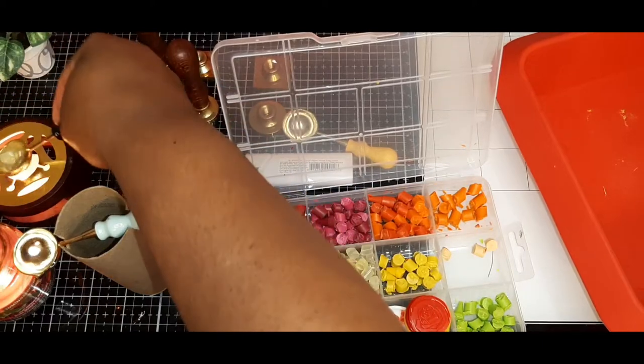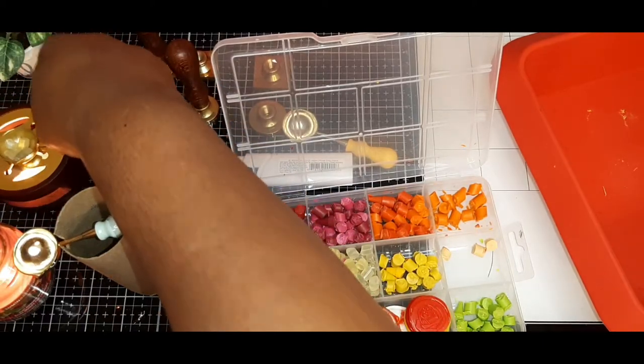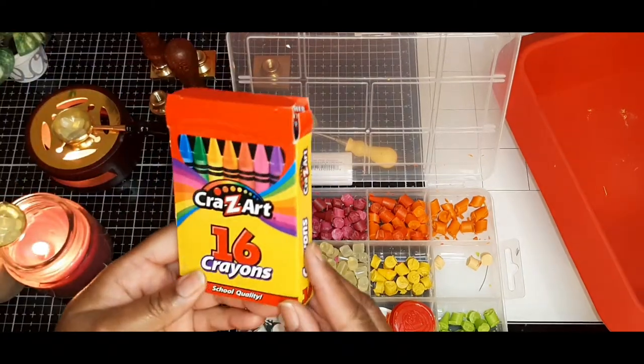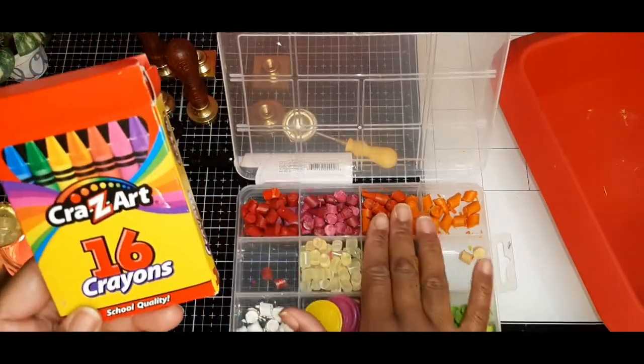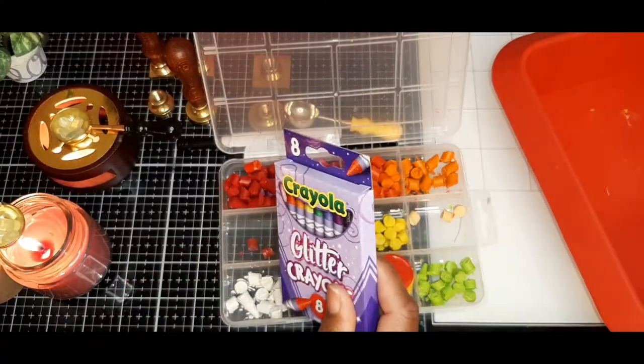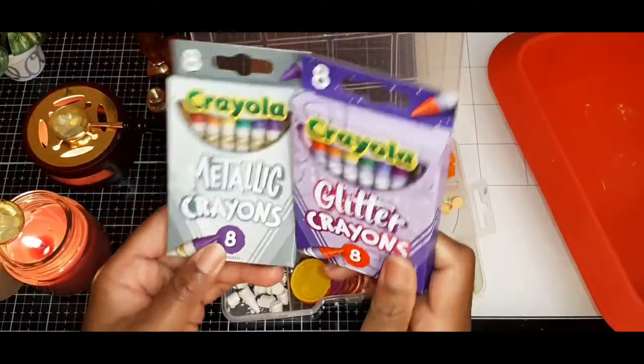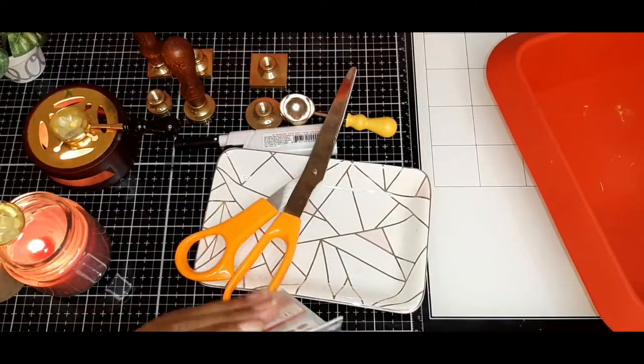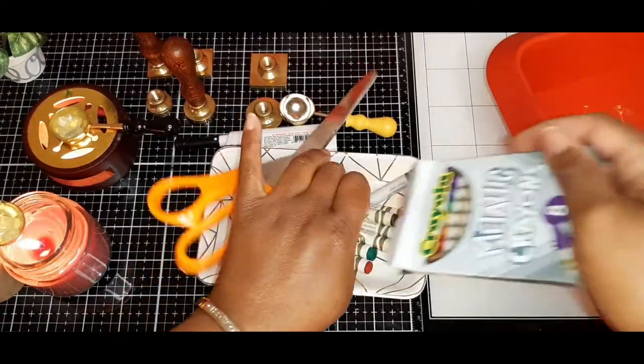Also in some of those compartments I have cut down crayons, just regular crayons. So in this video I did find some glitter crayons and some metallic crayons from Dollar Tree. It's just eight count and I found those in the back to school section.